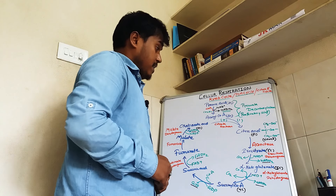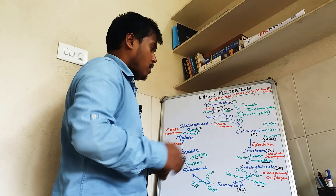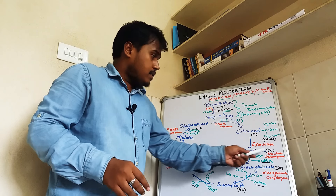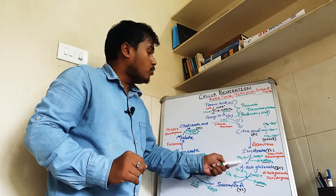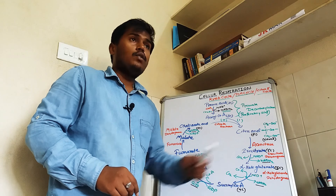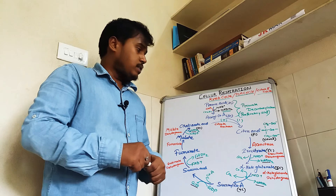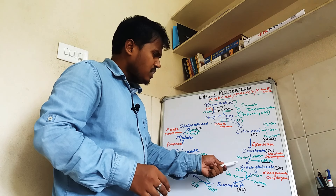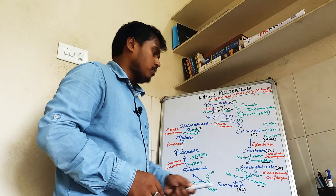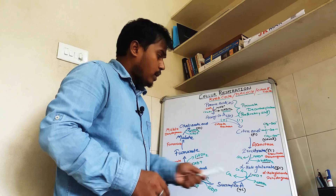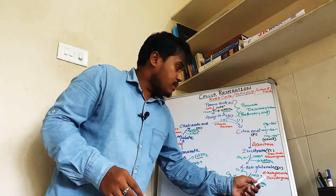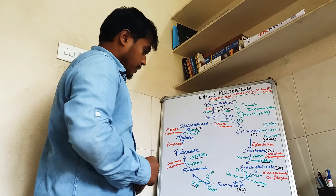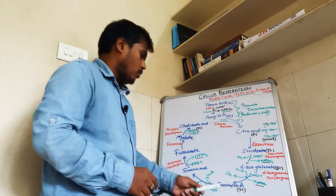Citric acid, in the presence of the enzyme aconitase, forms isocitrate, also a six-carbon compound. Next, isocitrate converts into alpha-ketoglutarate in the presence of isocitrate dehydrogenase. Here the six-carbon compound converts to a five-carbon compound because one CO2 is lost, and we get one NADH2. Alpha-ketoglutarate then converts into succinyl CoA, a four-carbon compound, releasing another CO2, with one CoA added in the presence of alpha-ketoglutarate dehydrogenase, and we get another NADH2.